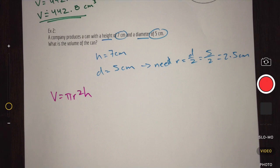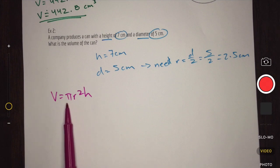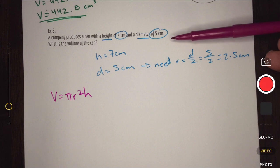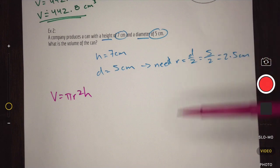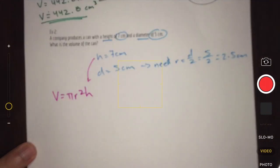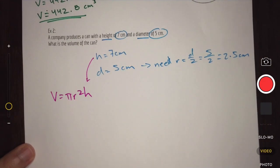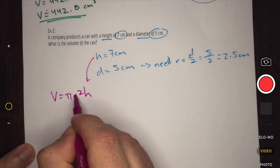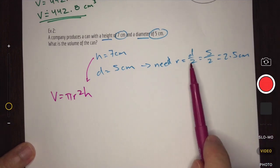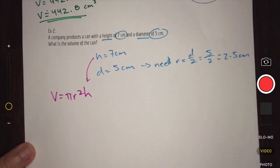In our second example, we're looking for the volume of a cylinder with a specific height and diameter. I write down the formula for volume and identify the variables: height equals 7 centimeters and diameter equals 5 centimeters. Height transfers directly into the formula. For diameter, I need to find the radius — radius equals diameter divided by 2, so 5 divided by 2 gives me 2.5 centimeters.